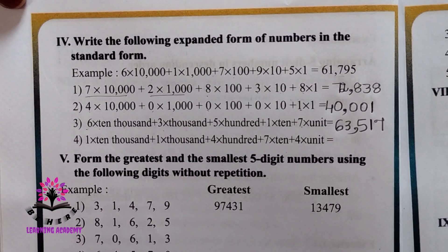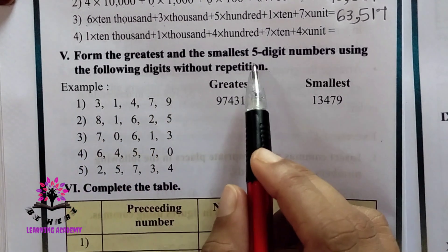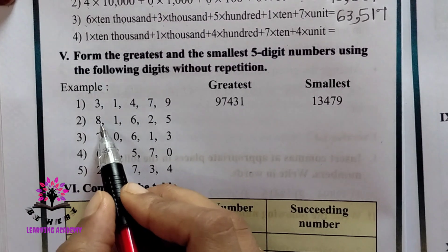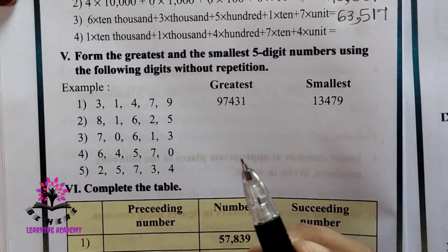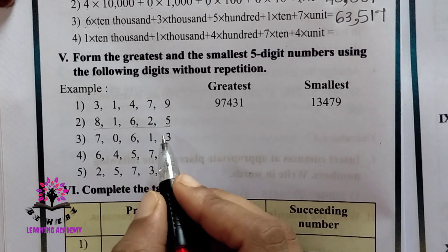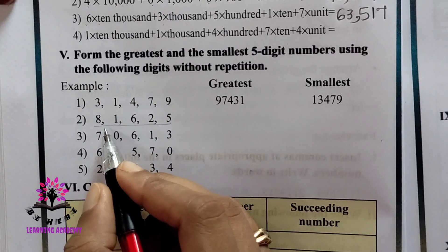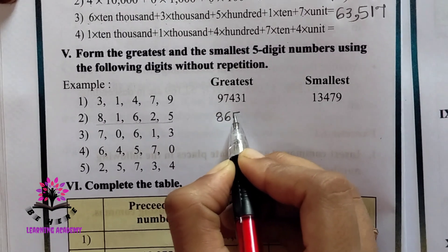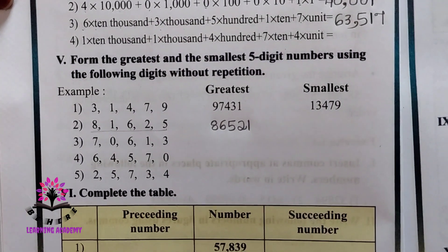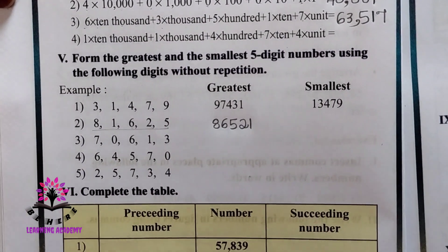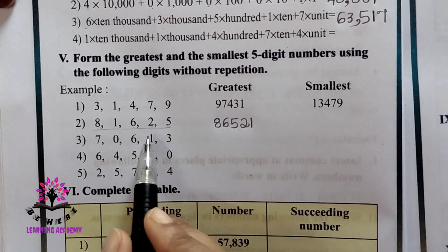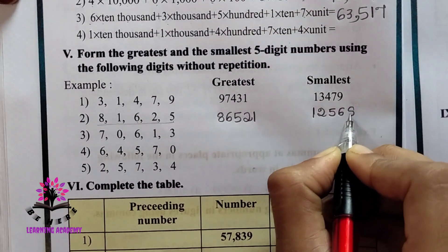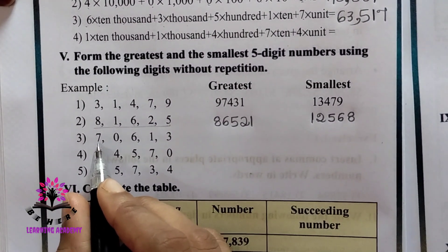Form the greatest and smallest five-digit number using the following digits without repetition. The first one is done. Second one: digits are 8, 1, 6, 2, 5. To form the greatest number, write them in descending order: 8, 6, 5, 2, 1. To form the smallest five-digit number, write them in ascending order: 1, 2, 5, 6, 8.